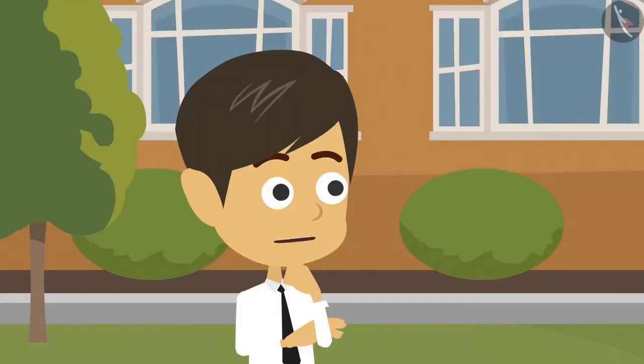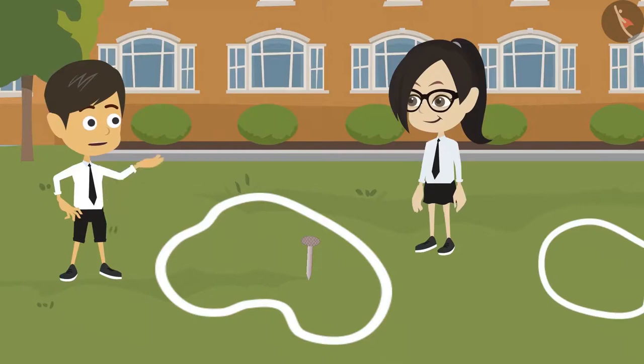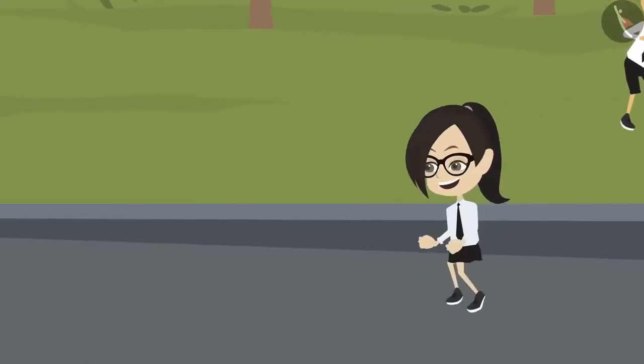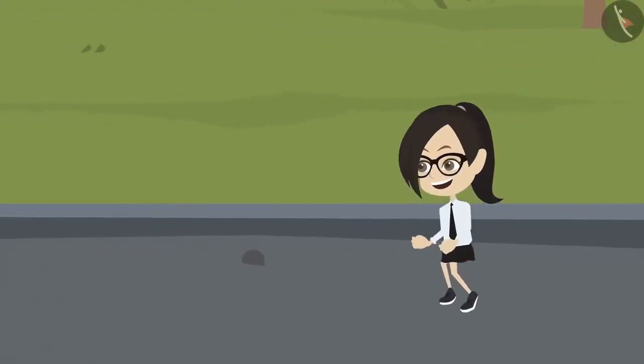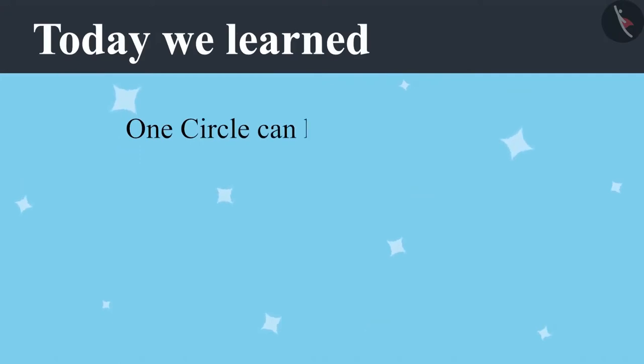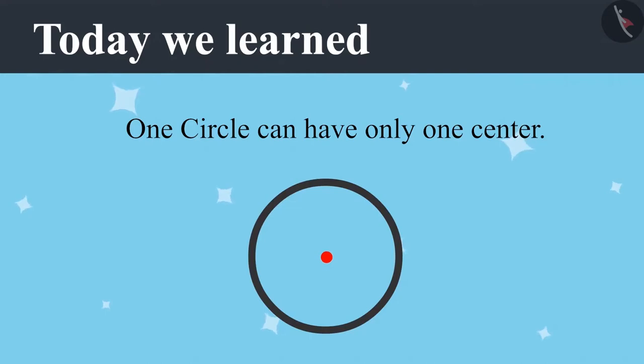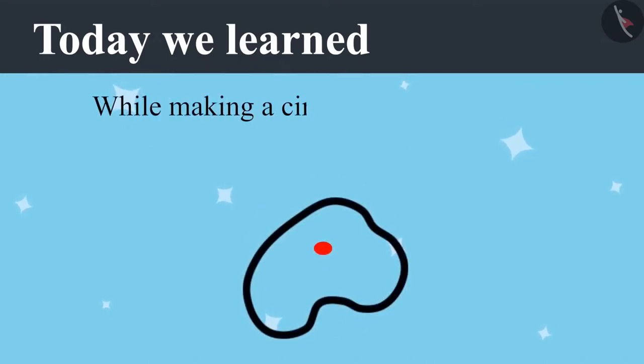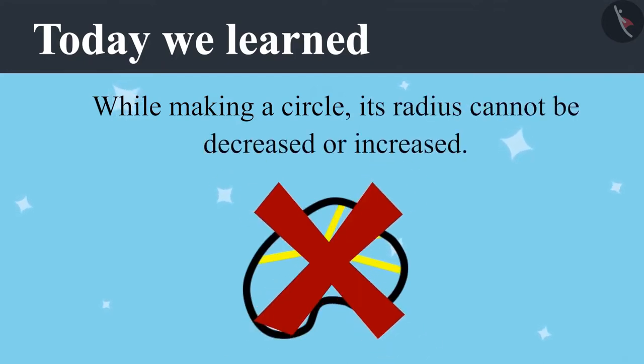Oh! Now I understood. But I will have to make all these circles again. Vandana is happy today because she helped Ayushman and Riyansh. She told Ayushman that a circle can have only one centre and told Riyansh that while making a circle its radius cannot be decreased or increased. If you pay attention in your class you will not have to repeat your work like Riyansh and Ayushman.